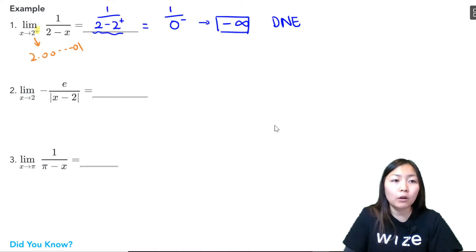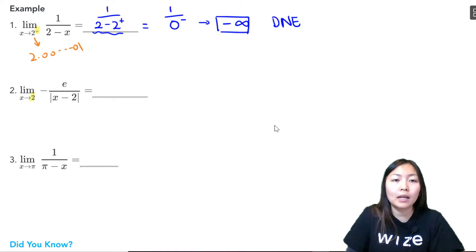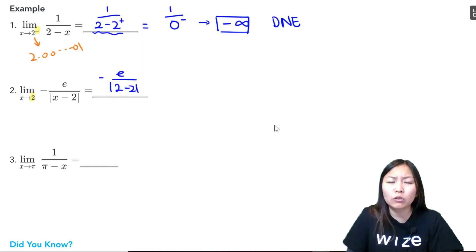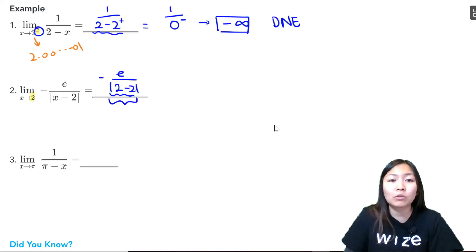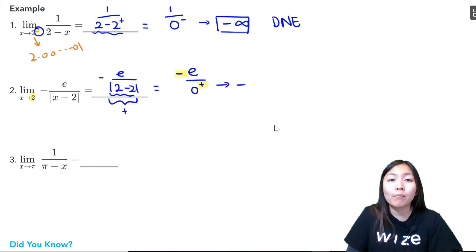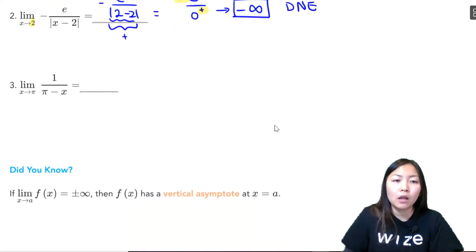Example 2: the limit as x approaches 2 of negative e over the absolute value of (x minus 2). Direct substitution gives negative e divided by |2 minus 2|. We don't know if we're approaching from the right or left, but taking the absolute value means the denominator is always positive regardless. So this gives negative e divided by 0⁺, meaning the overall value is negative divided by positive, which is negative. A number e divided by something really small gives infinity, so this approaches negative infinity — meaning the limit does not exist.